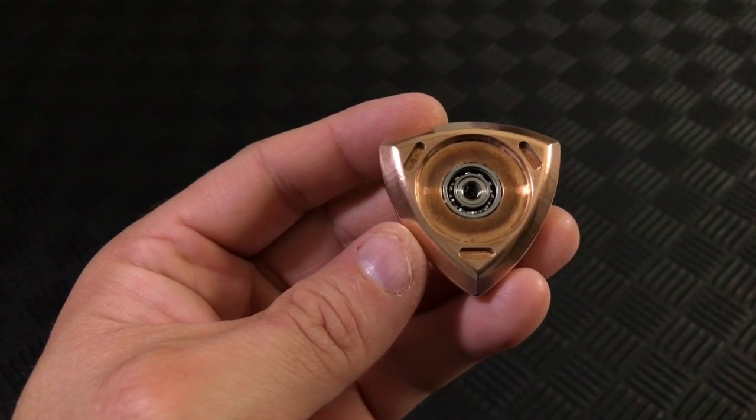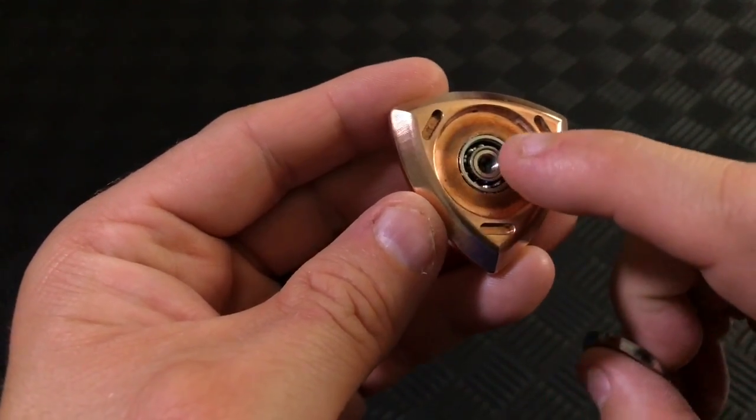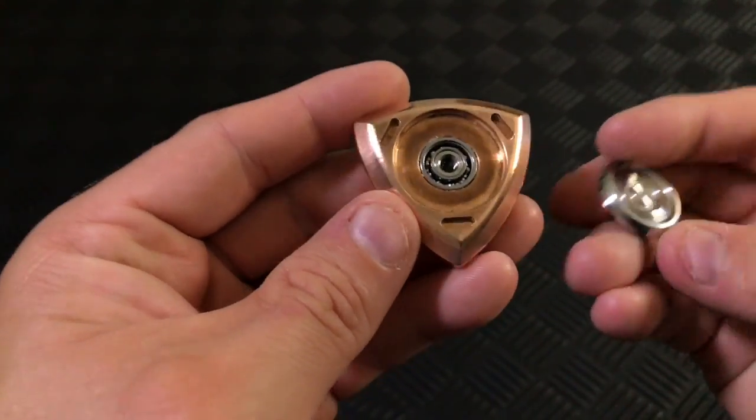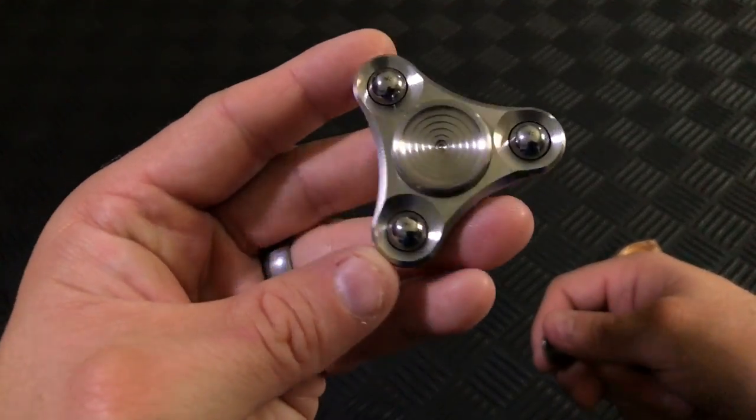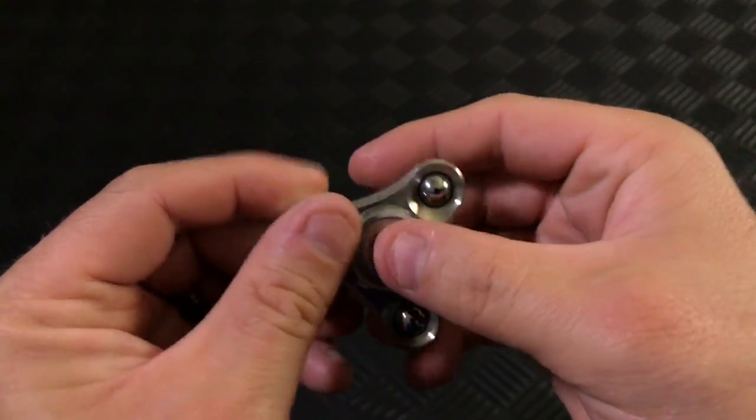Underneath is a press-fit hybrid ceramic R188 bearing and you can see how there's this deep recess in the body. This allows for the buttons to be elevated, meaning they will work well with other spinners that have a retainer, like this Axis Micro with the adapter core. As you can see here, they seem to work just fine.